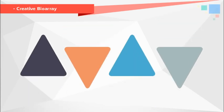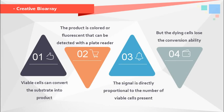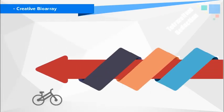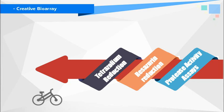Viable cells can convert a substrate into a product, resulting in a colored or fluorescent product that can be detected with a plate reader, and the signal is directly proportional to the number of viable cells present. But dying cells lose this conversion ability — that difference provides the basis for many commonly used cell viability assays, including tetrazoleum reduction, resazurin reduction, and protease activity assays.